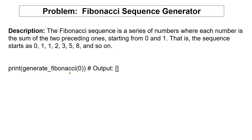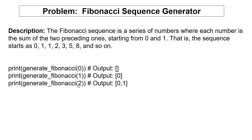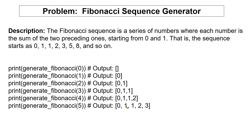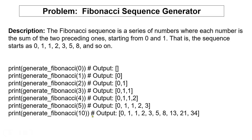Let's look at the expected outputs. If you pass 0, the output should be empty. If you pass 1, it should return [0]. If you pass 2, it should return [0, 1]. If you pass 3, return [0, 1, 1]. If you pass 4, return [0, 1, 1, 2]. If you pass 5, return [0, 1, 1, 2, 3]. The input number represents how many elements are in the array — so 10 means 10 elements total.